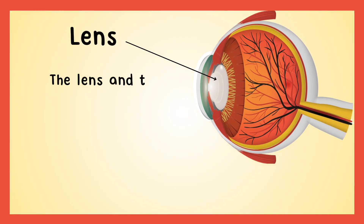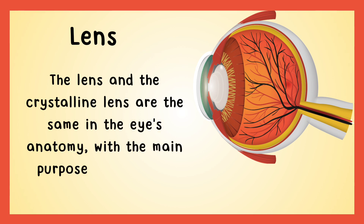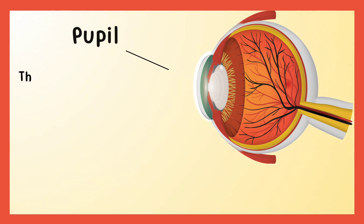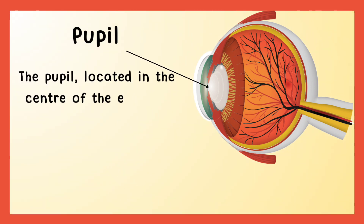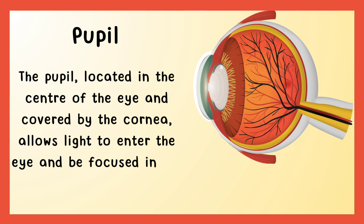Lens. The lens and the crystalline lens are the same in the eye's anatomy, with the main purpose of focusing light onto the retina. Pupil. The pupil, located in the center of the eye and covered by the cornea, allows light to enter the eye and be focused on the retina by the lens, forming images.